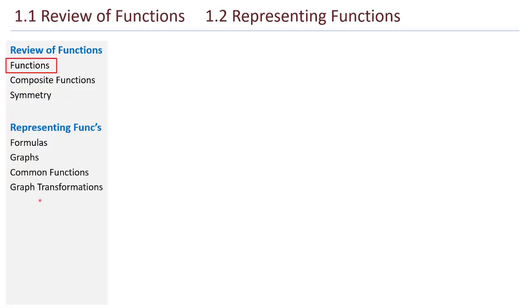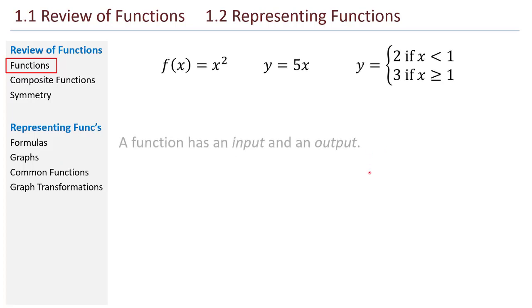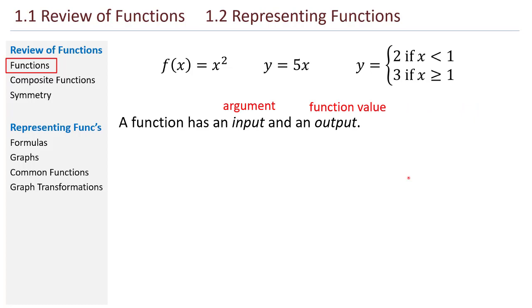Take a look at the outline on the left. We have review of functions and representing functions, so I'll hit a few categories in each. We begin with just functions in general. We have different ways of representing functions, but always a function has an input and an output. The input is called the argument of the function, and the output is the function value. We're going to use this phrase a lot, function value. So whenever you hear that phrase, think of the output of the function.